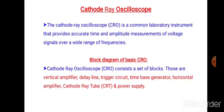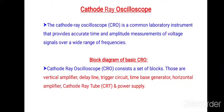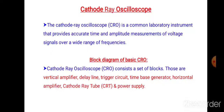Now we will be discussing about the block diagram of basic CRO. The cathode ray oscilloscope consists of vertical amplifier, delay line, trigger circuit, time-based generator, horizontal amplifier, cathode ray tube, and power supply. These are the parts in the block diagram.